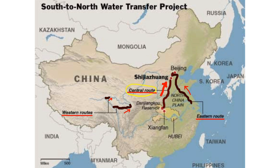The second part of the project is to revive the old Grand Canal and pump water from the lower Yangtze north, and is under construction. The third part of this initiative is to channel water from the upper reaches of the Yangtze to the upper reaches of the Yellow River on the Tibetan Plateau, which is much more complicated and still under investigation.